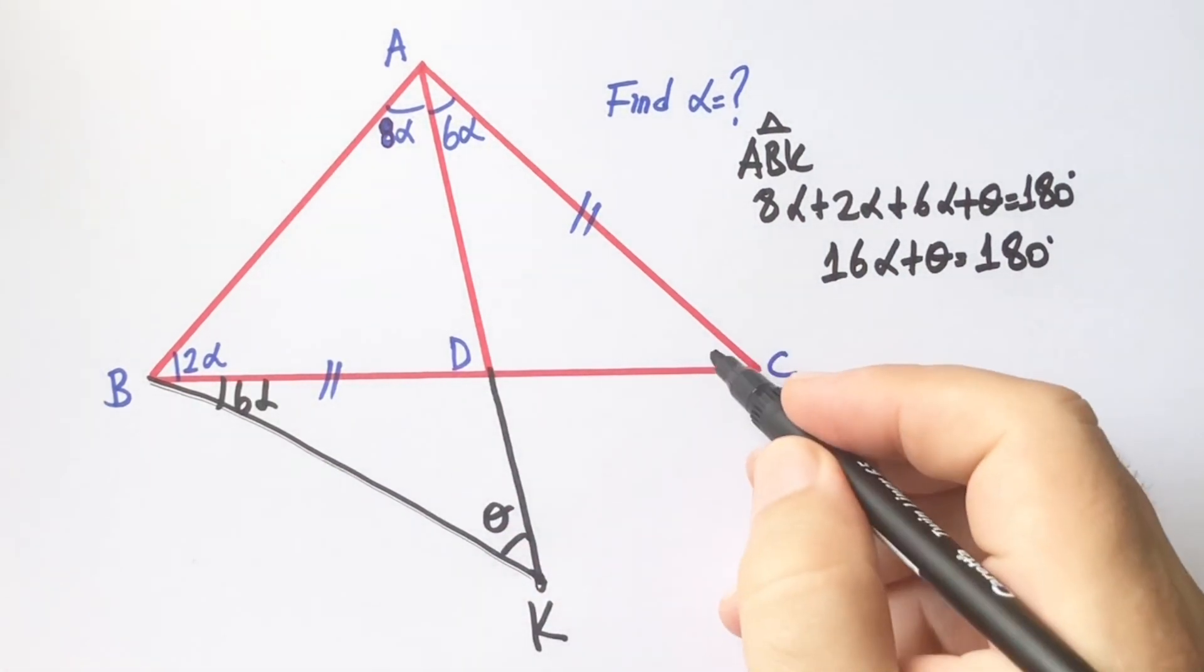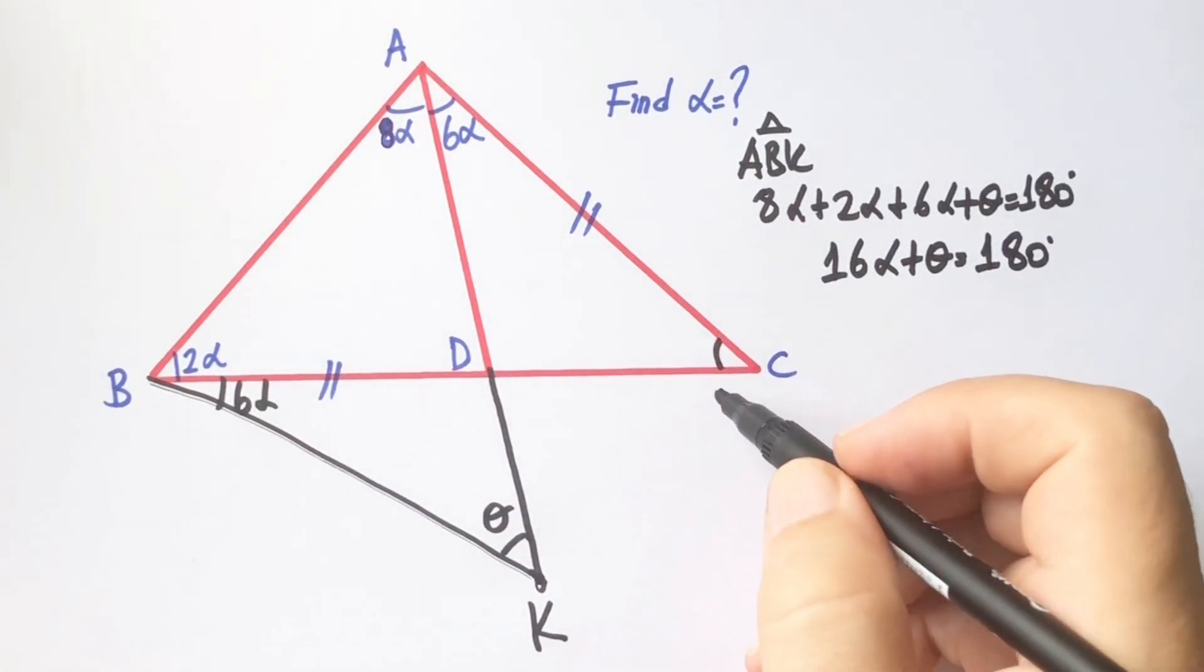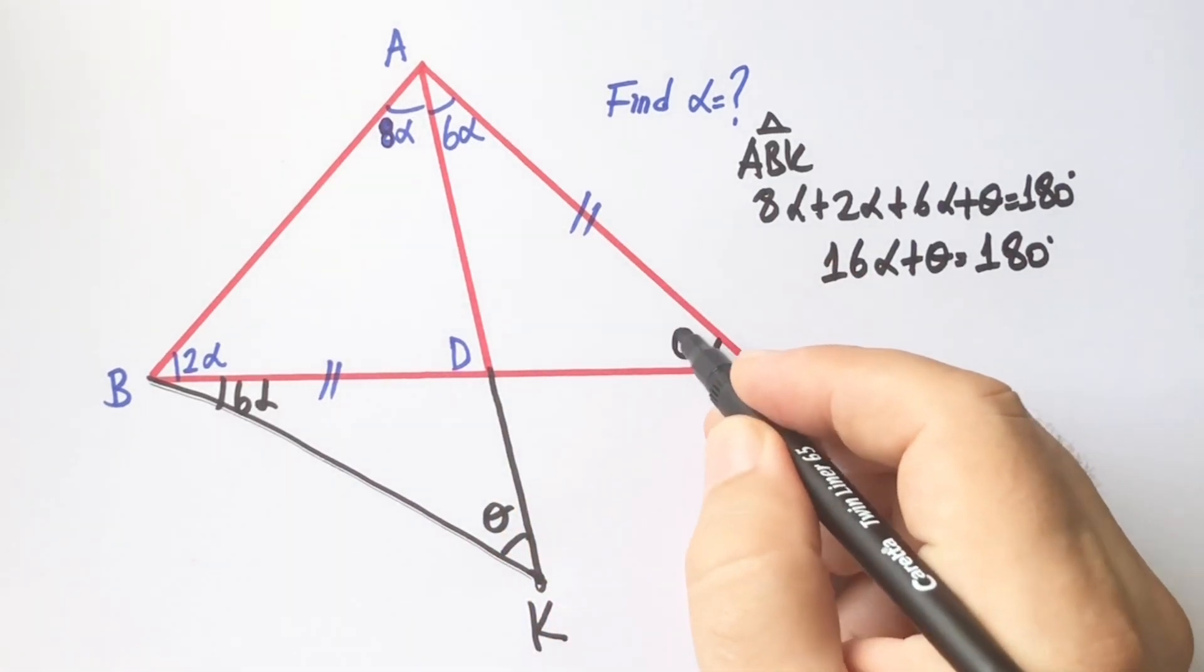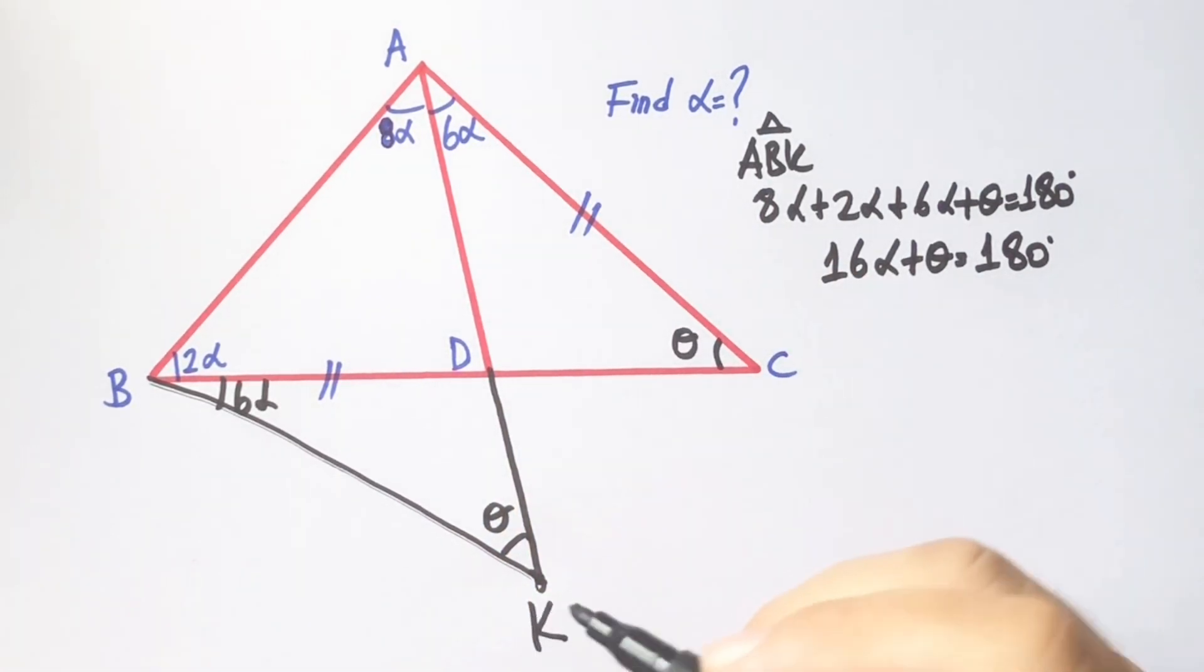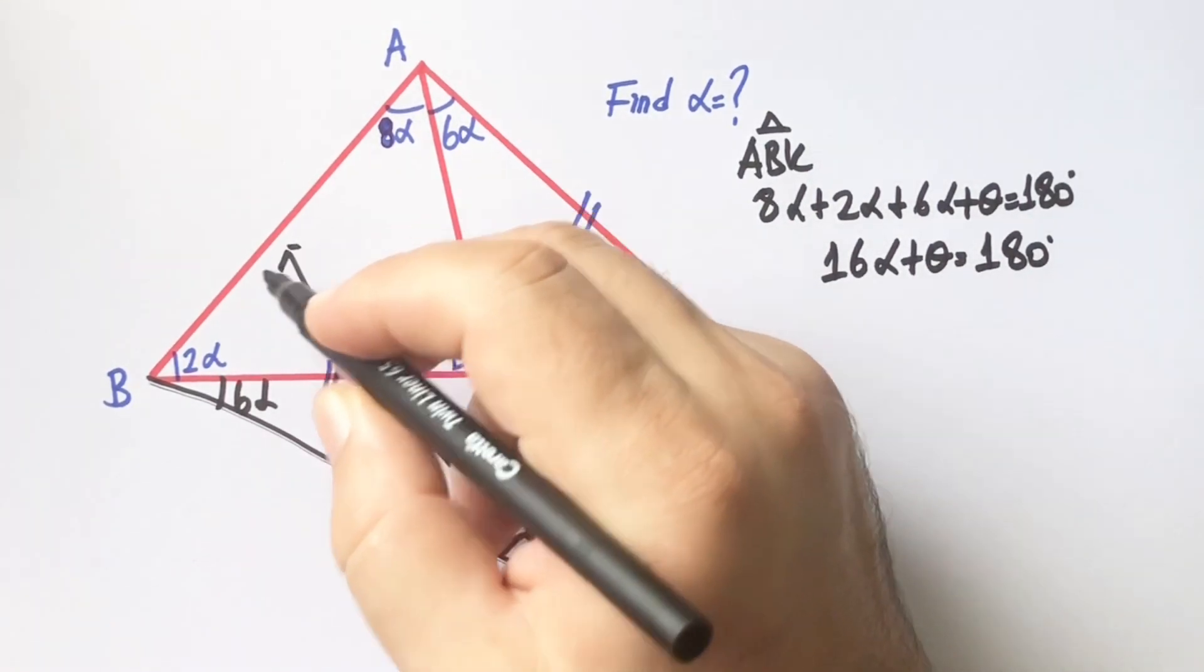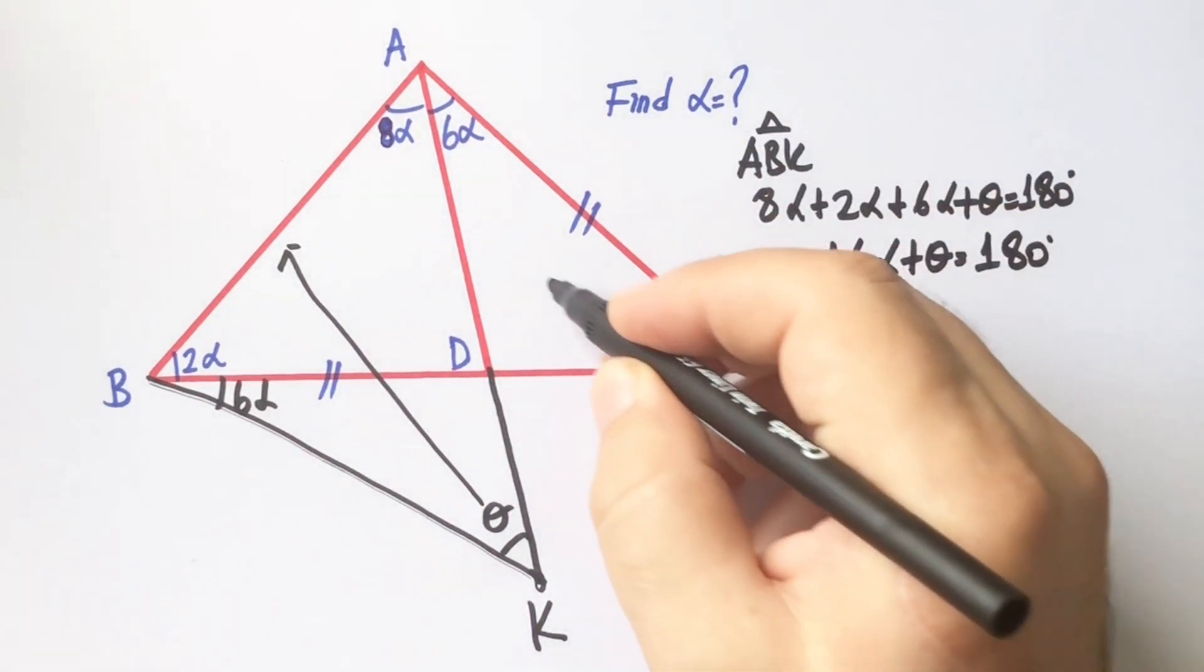In triangle ABC, this angle here must be θ. Here is also θ. If you notice that, there is the same length opposite to the thetas.